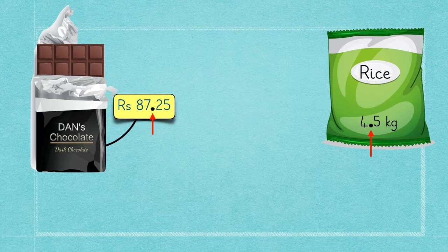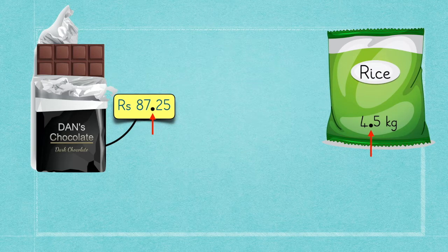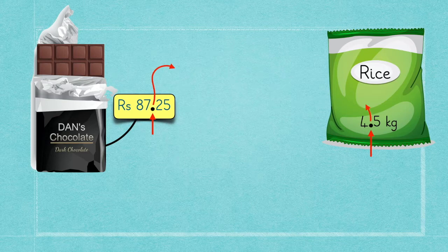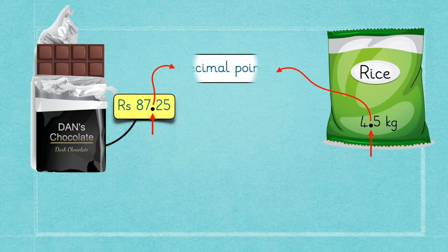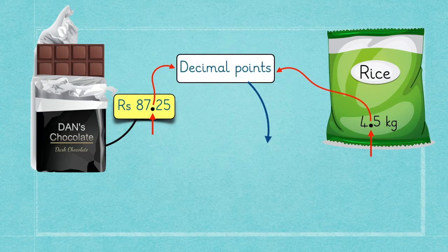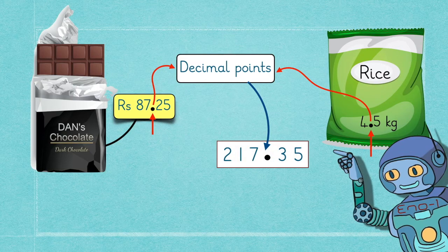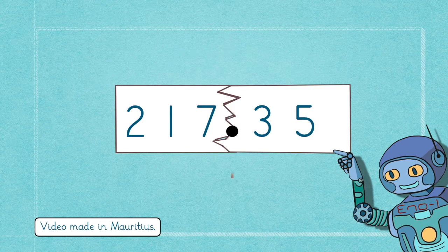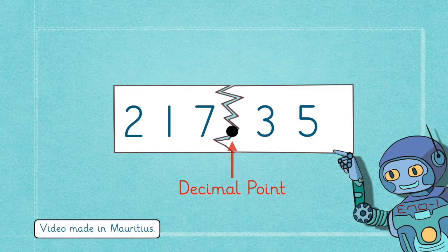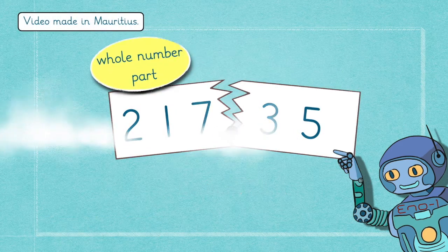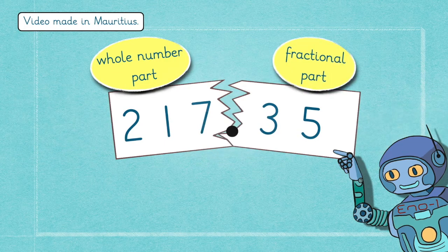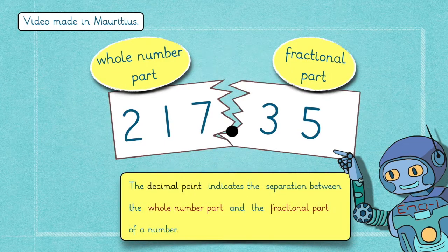Very often while shopping, I come across dots on price tags and other labels. These are called decimal points. Yes, that's correct. The decimal point separates the decimal number into two different parts: the whole number part and the fractional part.